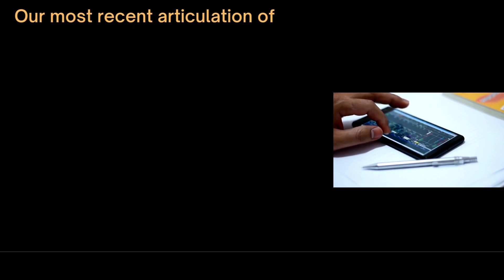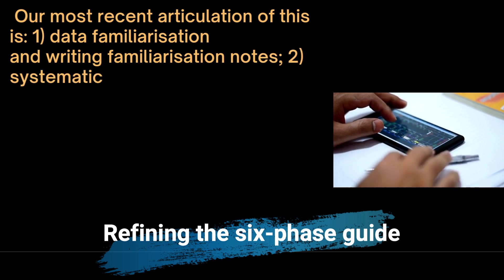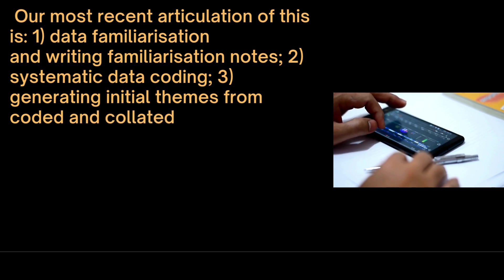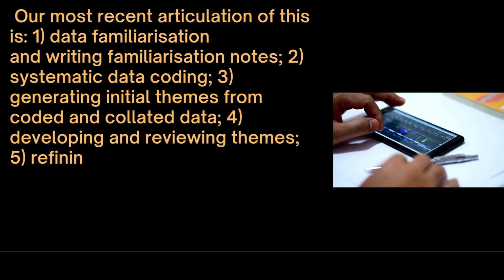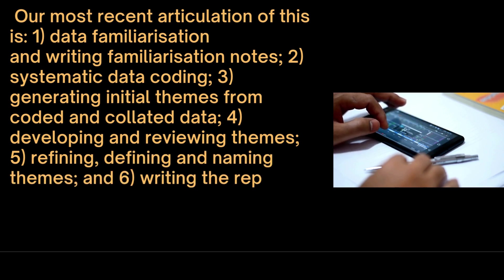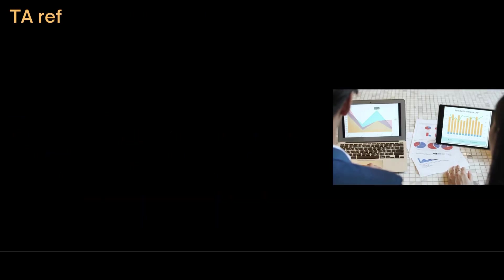In a recent articulation, Braun and Clark redefined the six-phase process as: number one, data familiarization and writing familiarization notes; secondly, systematic data coding; thirdly, generating initial themes from coded and collated data; developing and reviewing themes; refining, defining, and naming themes; and sixthly, writing the report. This phase approach is not intended to be followed rigidly. Let's discuss the pitfalls.